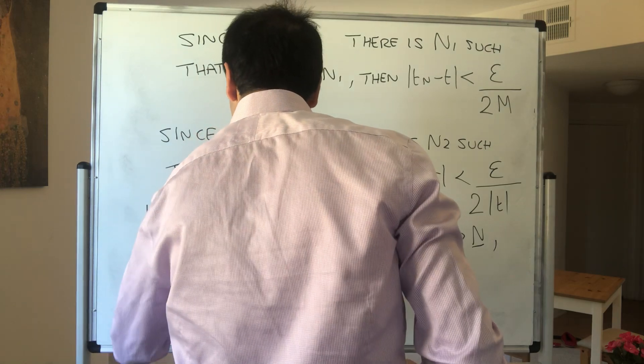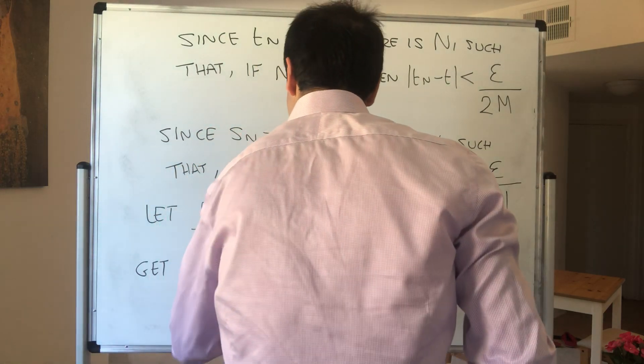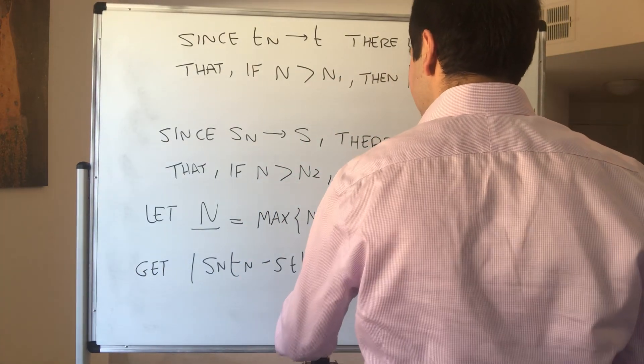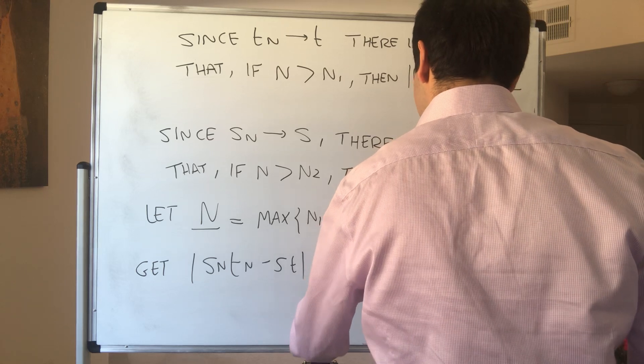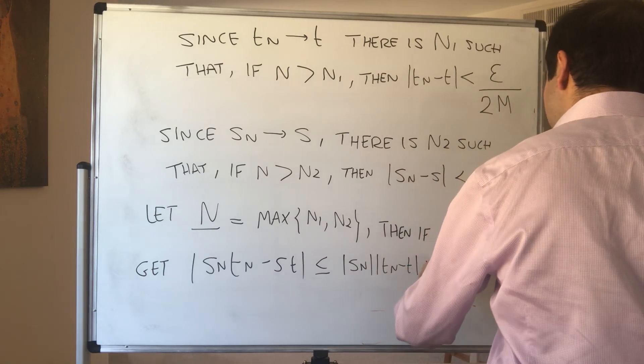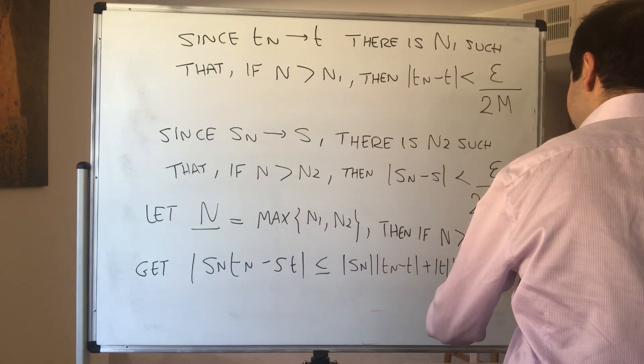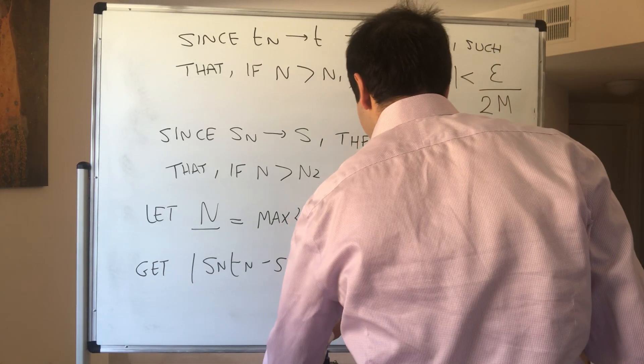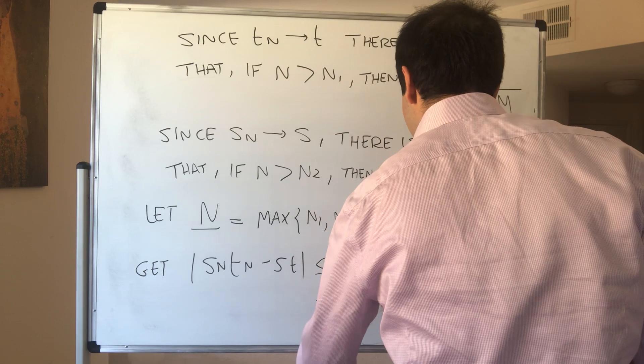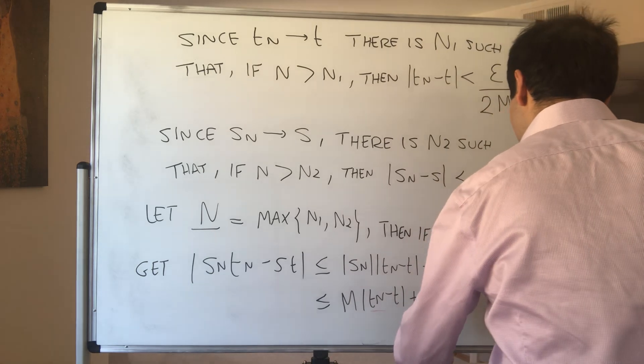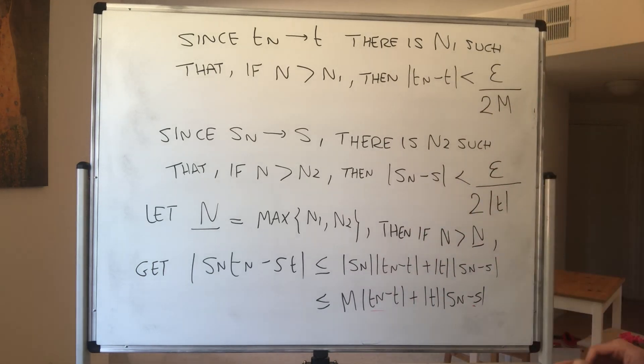So Sn Tn minus St, it's less than or equal to, I believe it was Sn times Tn minus T plus absolute value of T times Sn minus S. And now you see this just flows like butter.